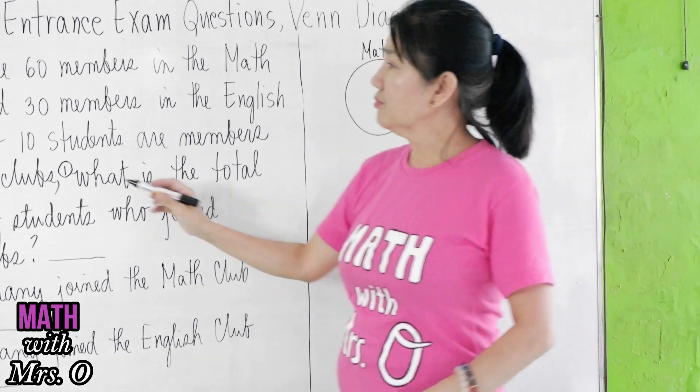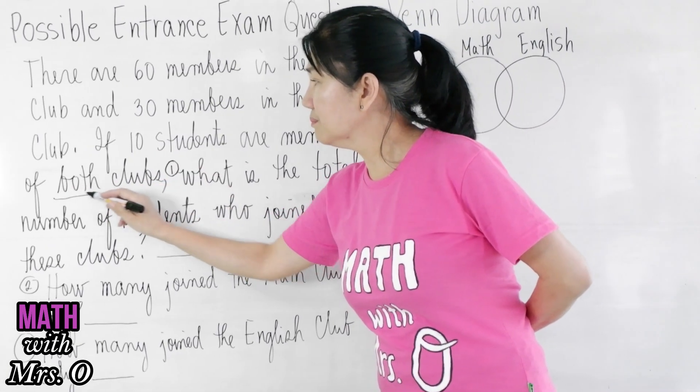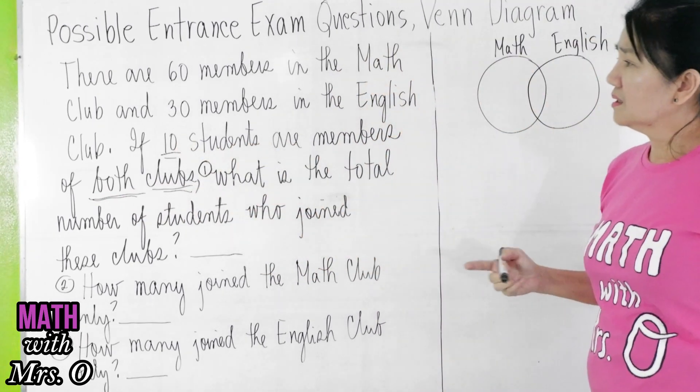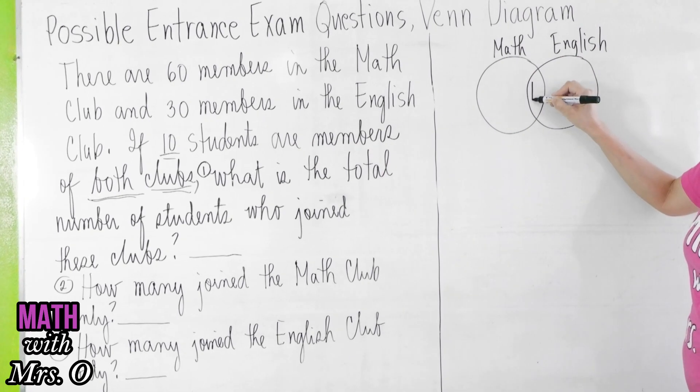You always start with the number of students who join both clubs. And you see that there are 10 students who are members of both clubs, so you write the 10 here.